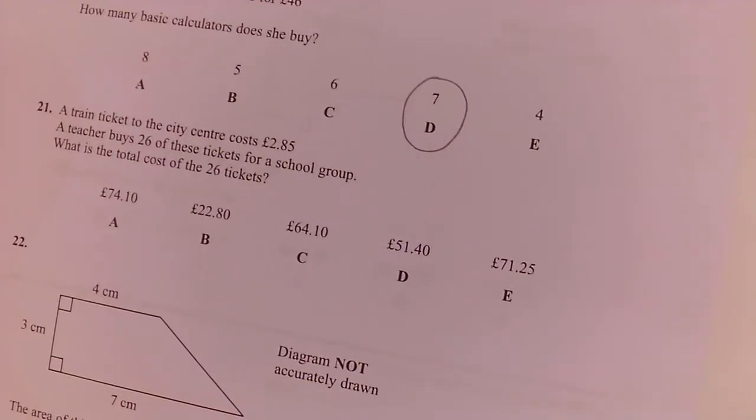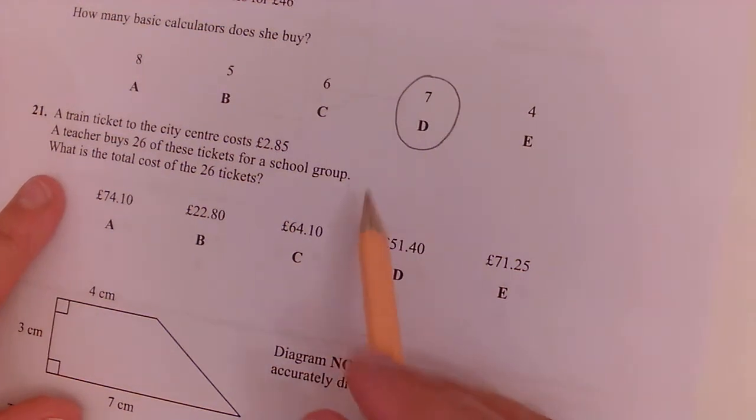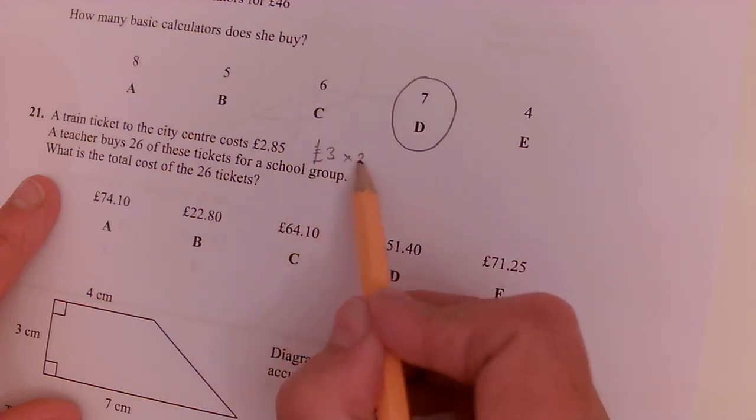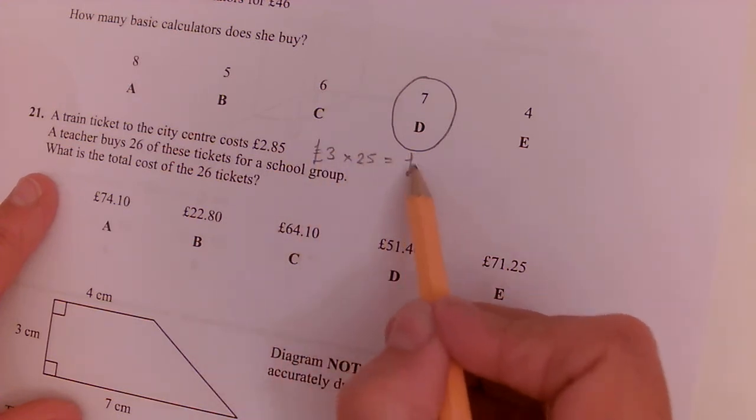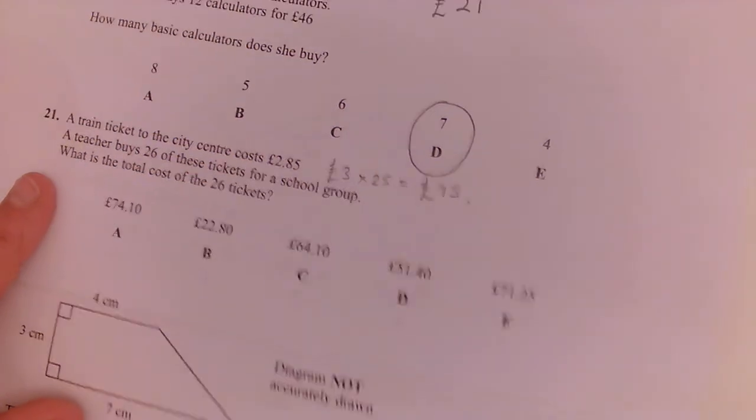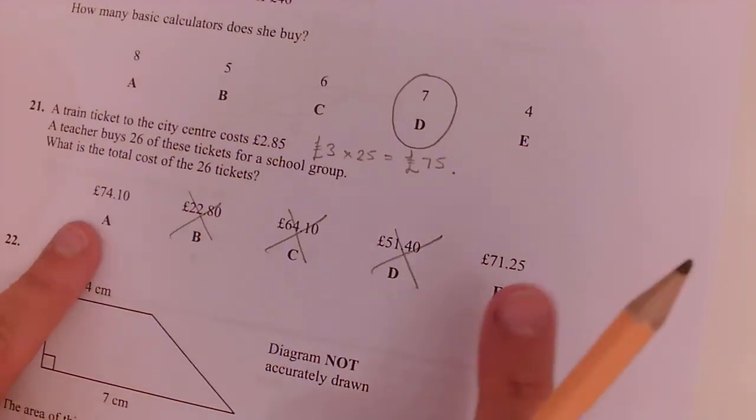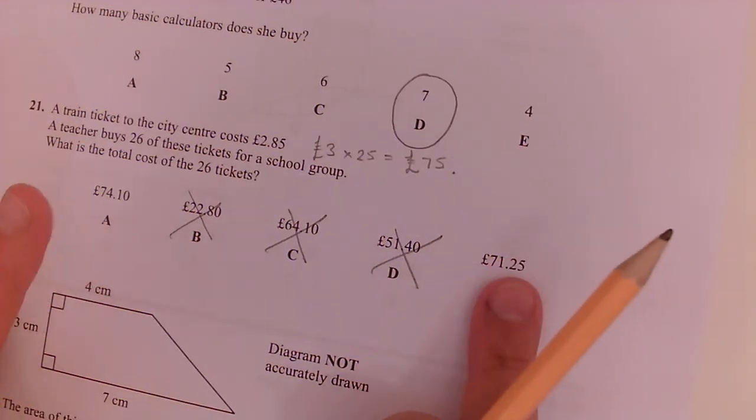Question 21. A train ticket to the city costs £2.85. A teacher buys 26 of these for the school group. Work out the total cost of 26 tickets. Well, it's roughly £3 times £25. So we know the price is sitting roughly about £75. So we can automatically say, well, it's not that one, it's not that one, and it's not that one. So it's one of these two here.